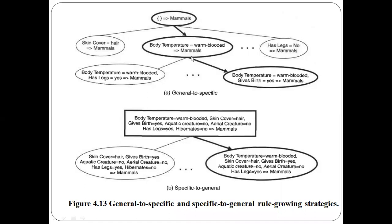Once we meet the stopping condition — when all conjuncts have been added on the LHS side — we stop the rule growing process. Initially we had an empty antecedent; our aim is to define the rule for classifying mammals. At each step we add conjuncts: first 'body temperature equals warm-blooded', then 'has legs equals yes', and so on. Like this we grow the rules at each step.